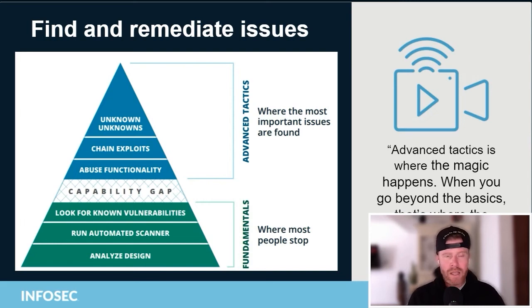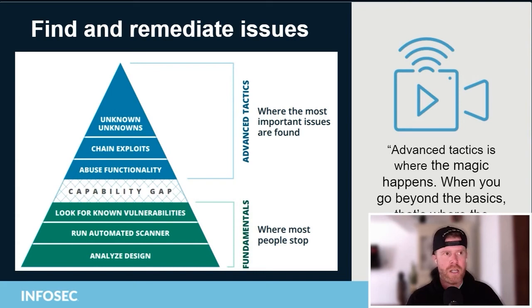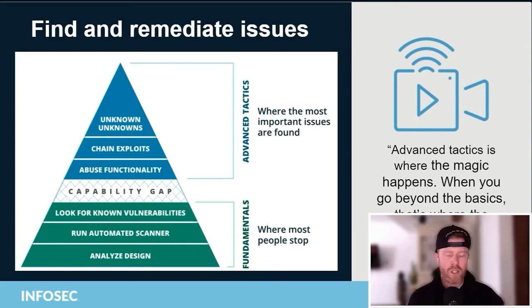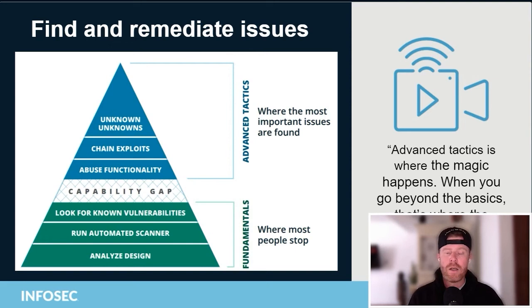An example came from a project we did recently, and it had two issues. The first issue is information leakage — it means a system is giving up information that it shouldn't. It's not really the end of the world and it's not even directly exploitable. In this case, any user could identify any other user in the system. That's not exploitable; you just don't want it to happen.